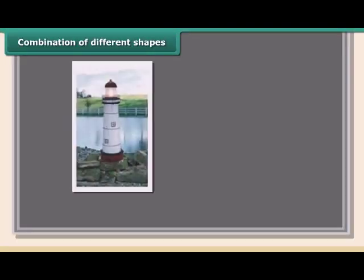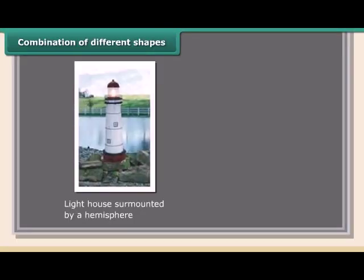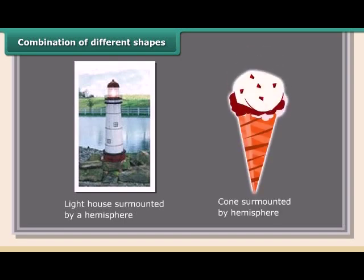Some shapes are a combination of different shapes, such as a lighthouse surmounted by a hemisphere, or a cone surmounted by a hemisphere. We use these combined shapes in our day-to-day life.